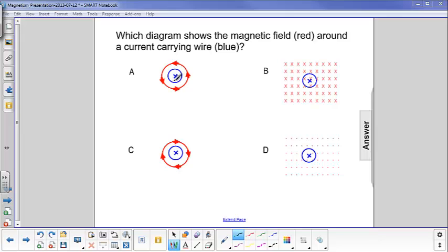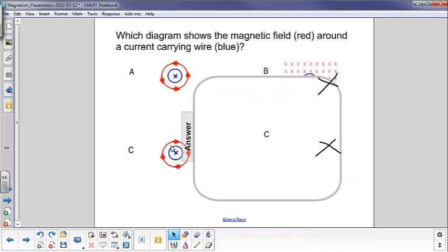This would be if the current was coming out of the page, you would have your thumb coming out, and then you can just visualize your right fingers curling around that way. Both of these would not be correct because they're not giving you that rotational motion around the wire. So the correct answer is C.